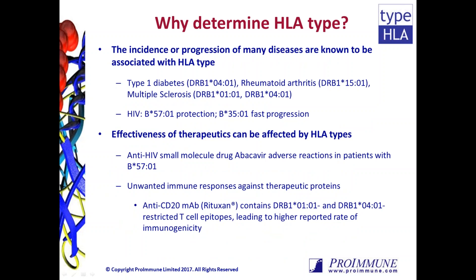So why is it important to know the HLA type of patient or donor samples? Many diseases are known to be associated with HLA type — for some diseases the incidence is increased in individuals with a particular HLA type. Examples of these associations include type 1 diabetes with DRB1*0401, rheumatoid arthritis with DRB1*1501, and multiple sclerosis with DRB1*0101 and DRB1*0401.